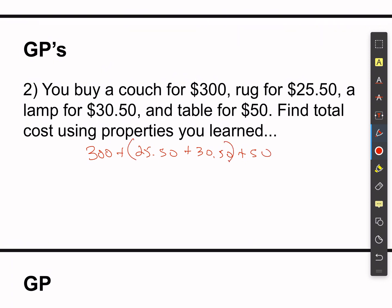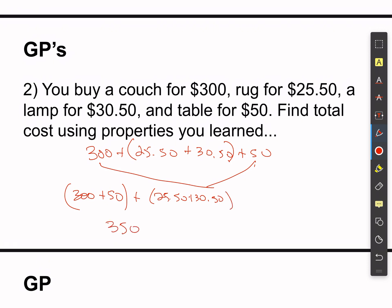What started out as 300 plus 25.50 plus 30.50 plus 50 — I can now group these together to make the addition simple. Group 300 and 50 together, then 25.50 and 30.50 together. 300 plus 50 is 350. 25.50 plus 30.50: 25 plus 30 is 55, plus another dollar gives 56.